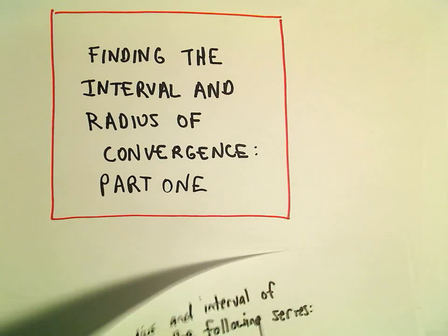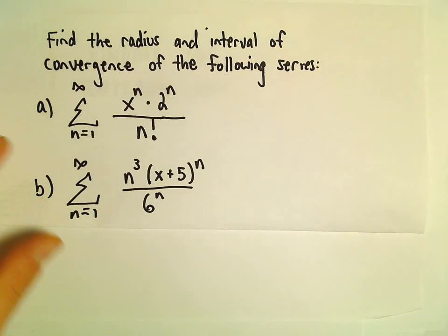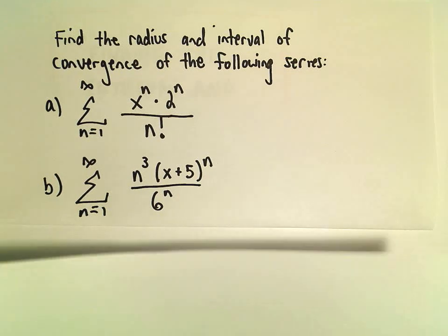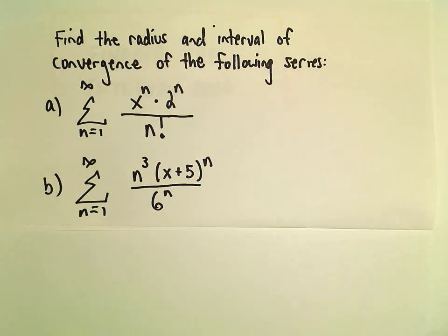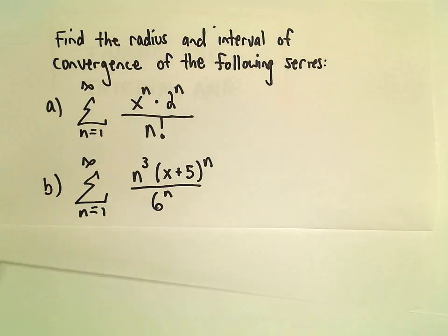All right, here we're going to start looking at some examples of finding the radius and interval of convergence. In part A here, we've got the series from 1 to infinity, x to the n times 2 to the n over n factorial.